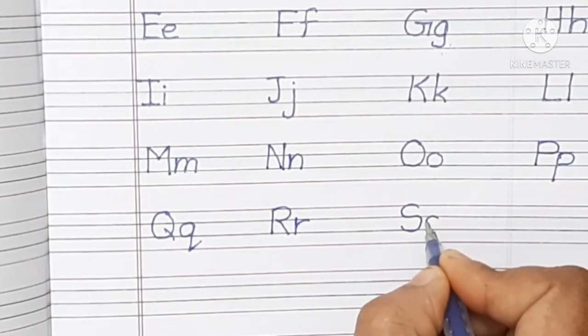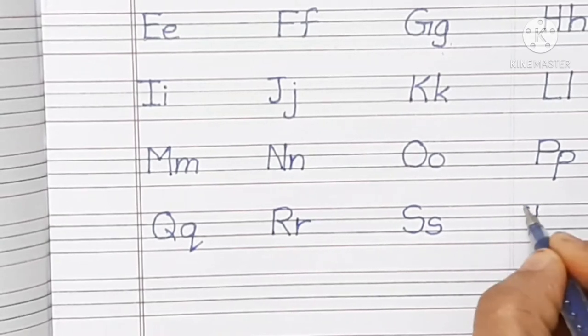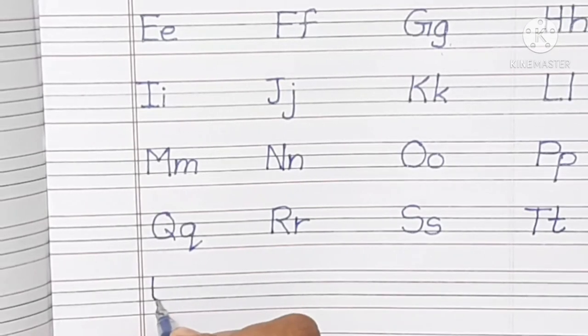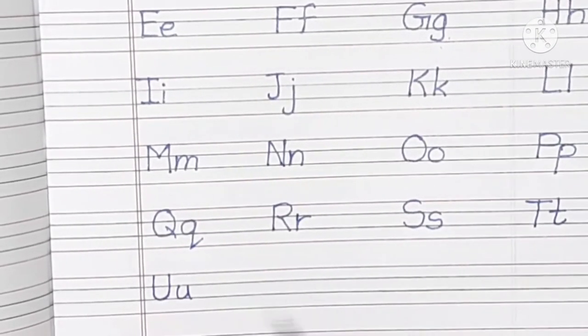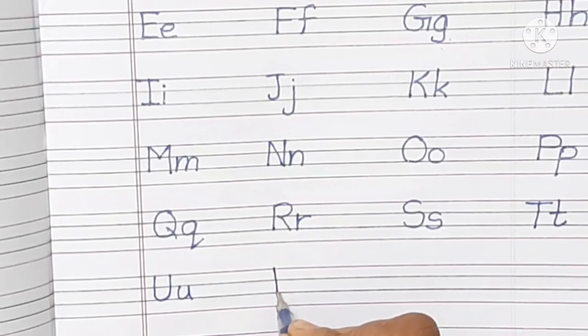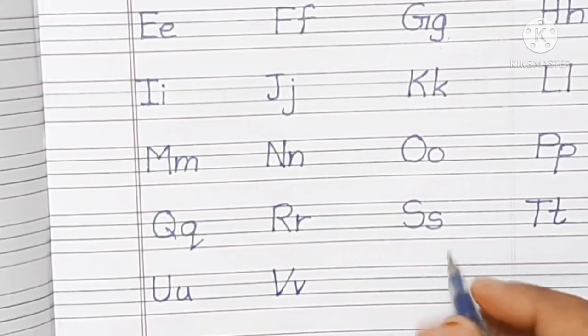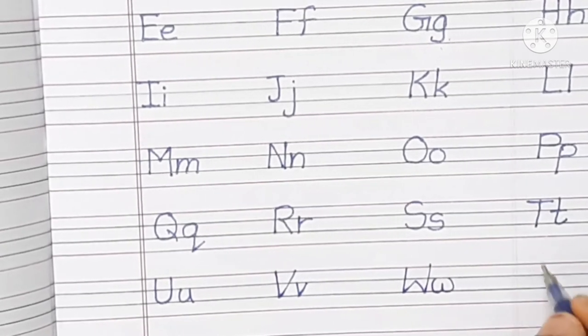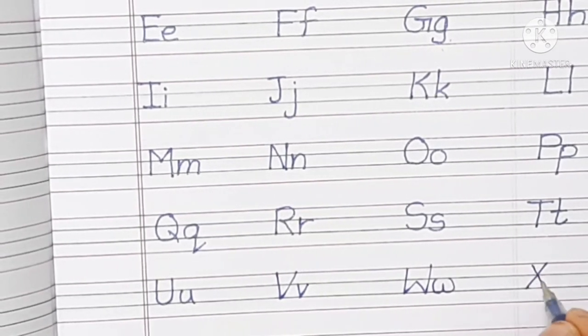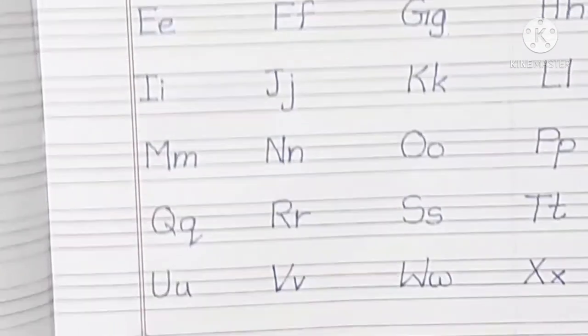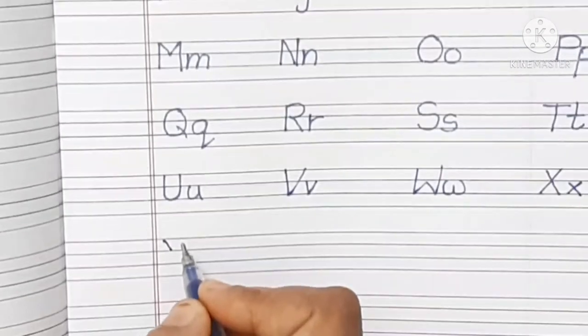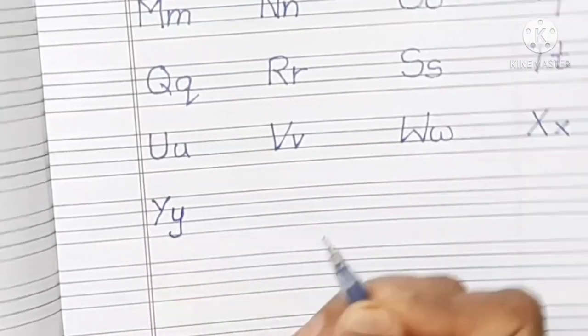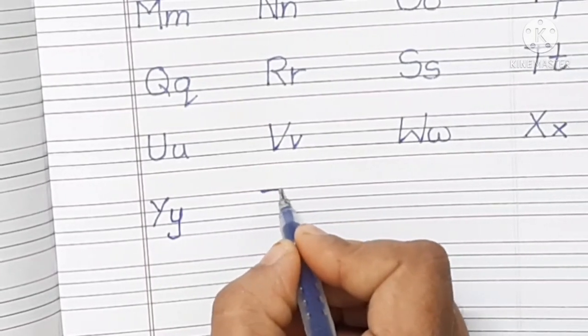Capital T small t, capital U small u, capital V small v, capital W small w, capital X small x, capital Y small y, and the last letter is capital Z small z.